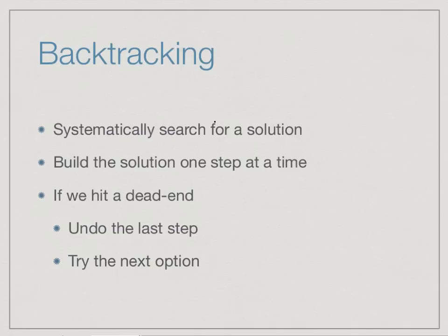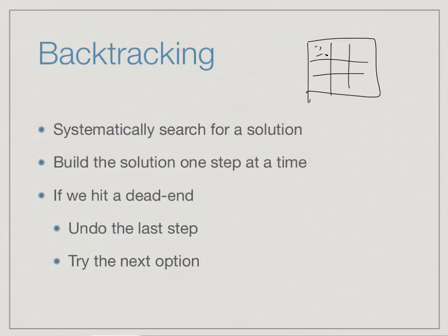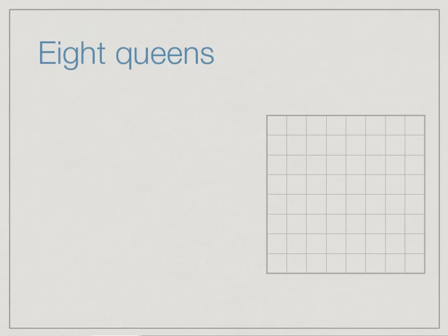For many problems we have to search through a set of possibilities in order to find the solution. There is no clear solution that we can directly reach, so we have to systematically search for it. We keep building candidate solutions one step at a time. It might be that the solution we are trying to get doesn't work, so we hit a dead end, and then we undo the last step and try the next option.